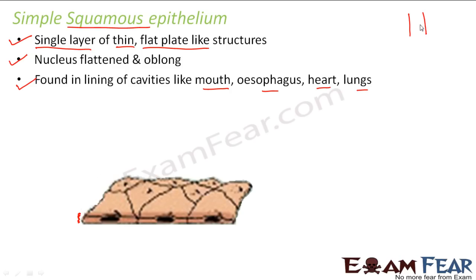If you have a thick structure and substances need to be transported through that boundary, compare that to a thin structure where you also have to transport substances. Which is easier? The thin one, right? Because when you want the transfer of materials to take place across a boundary, it should be thin and flat — that makes it better. That is why this thin flat simple squamous epithelium is present in locations where transport of substances takes place through a selectively permeable membrane.